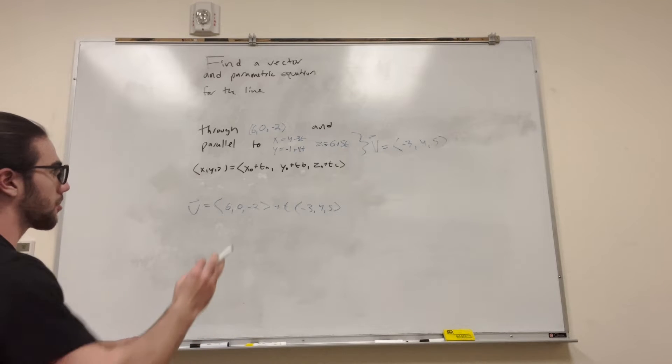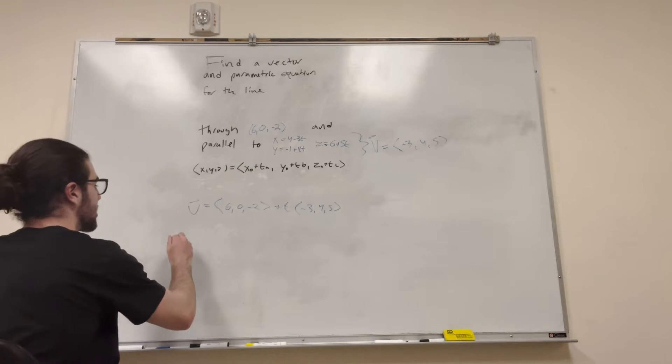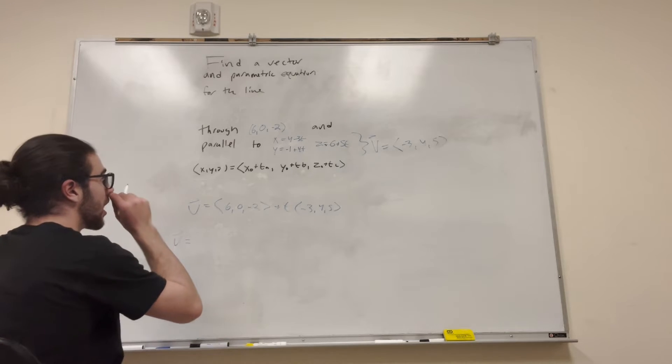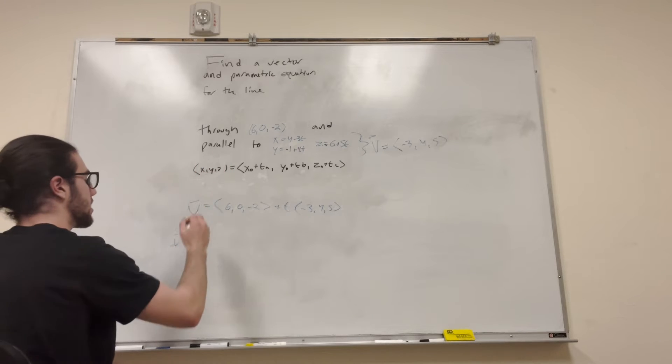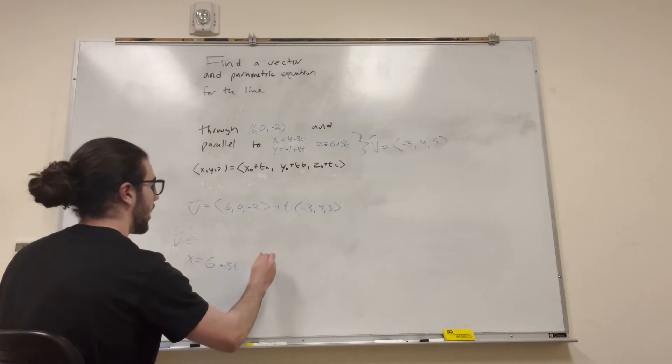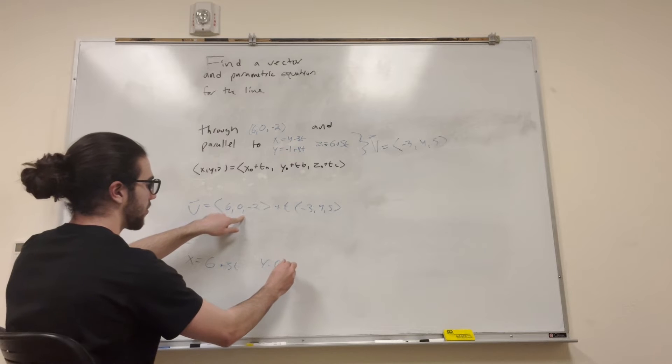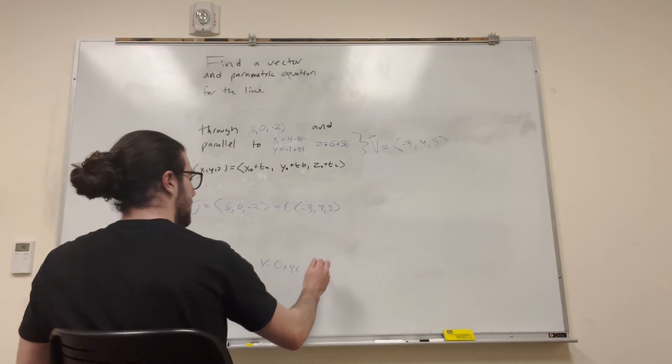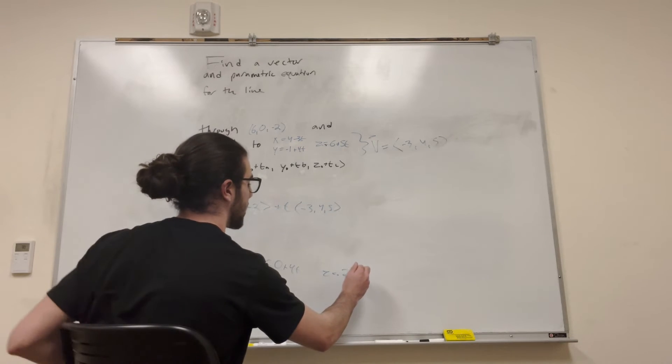And our parametric equation is basically putting it back into this form, but with our own points. So x equals 6 minus 3t, y equals 0 plus 4t, and z equals -2 plus 5t. There you go.